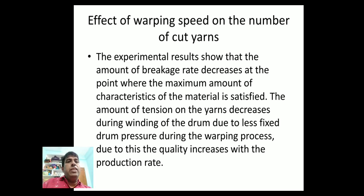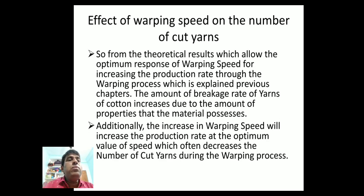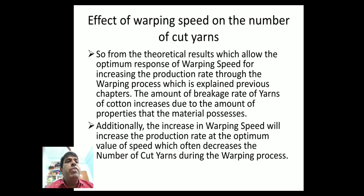The experimental results show that the amount of breakage rate decreases at the point when the maximum amount of material characteristics are satisfied. The amount of tension on the yarns decreases during winding of the drum due to less fixed drum pressure during the warping process. Due to this, the quality increases with the production rate.